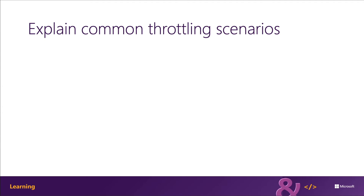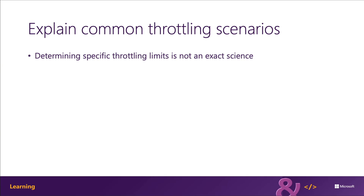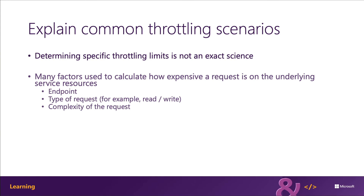Now that we've covered what throttling is and why requests can be throttled, let's look at some common scenarios that can cause requests to be throttled. Determining if a request is going to be throttled is not an exact science — you won't find reliable metrics that can be applied across all applications, endpoints, and request types. As a general rule, how expensive a request is on a particular endpoint is the determining factor, which depends on what endpoint is being targeted, whether the request is a read or write operation, and how complex the request is.